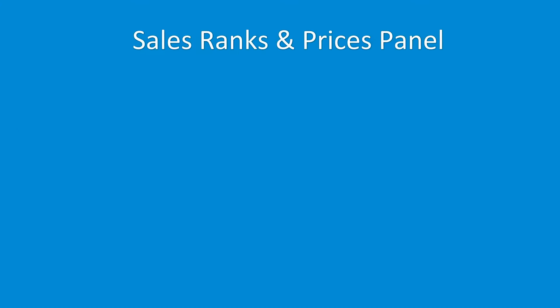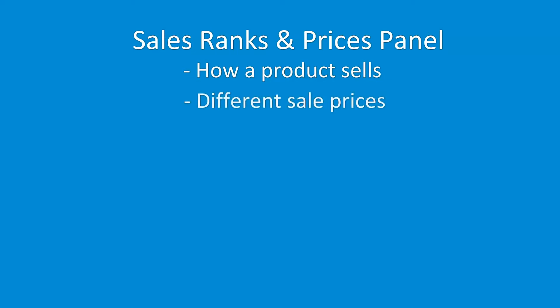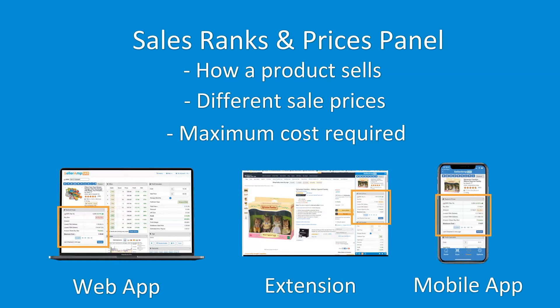The Sales Ranks and Prices panel of SAS gives a quick view into how a product sells relative to its category and the different sale prices of the product. It will also indicate the maximum cost you'll need to meet the requirements in your profile. As usual, it is available in all SAS tools: web app, extension, and mobile app.